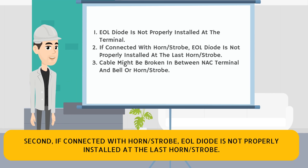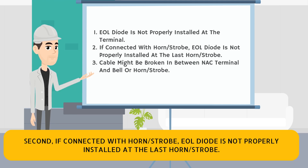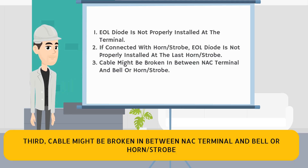Second, if connected with a horn strobe, the EOL diode is not properly installed at the last horn strobe. Third, the cable might be broken in between the NAC terminal and the bell or horn strobe.